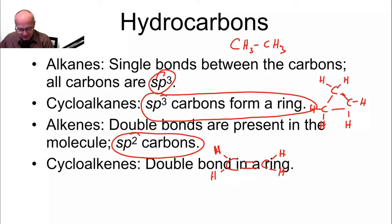Cycloalkenes, double bond inside of a ring. So, for example, there you go. That's a cycloalkene right there. It's a carbon-carbon double bond inside of a ring.